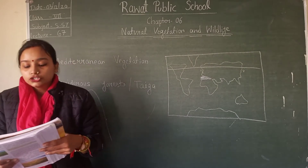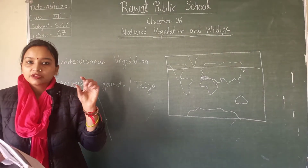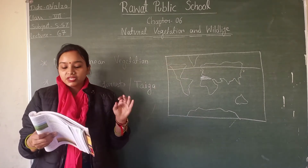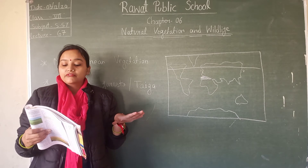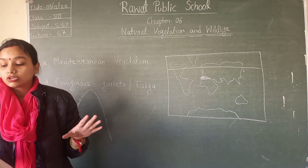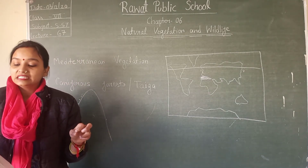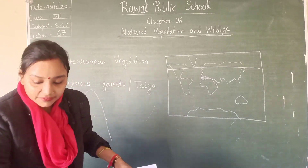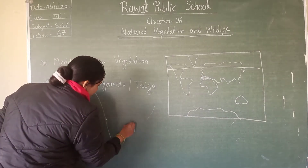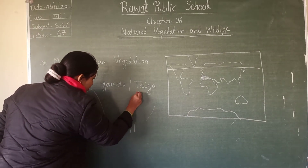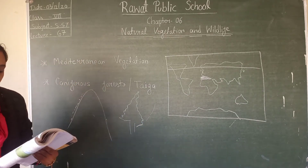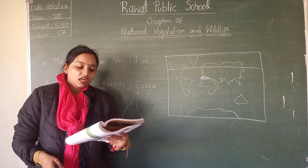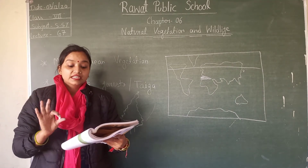Such areas are characterized by short, warm summers and very cold winters with low temperatures. Coniferous forests, which are adapted to grow in such a climate, bear their seeds in hard cones and have narrow, needle-shaped leaves.